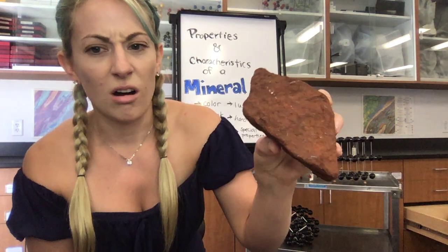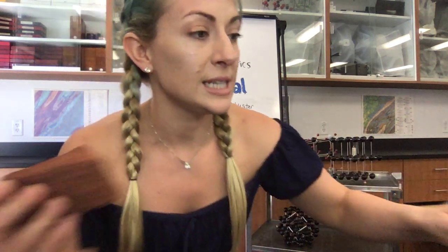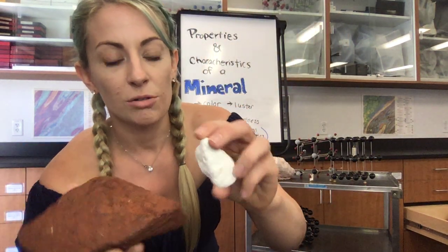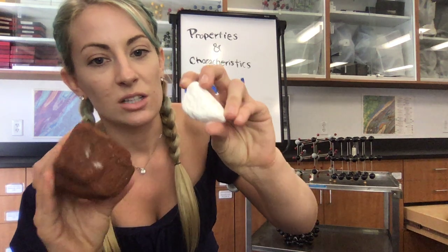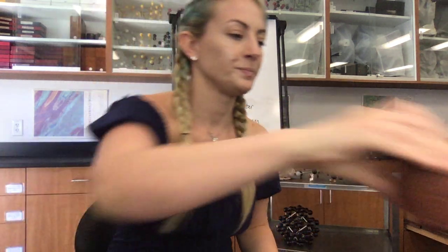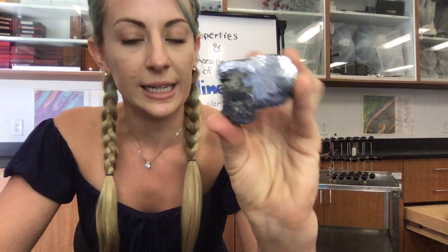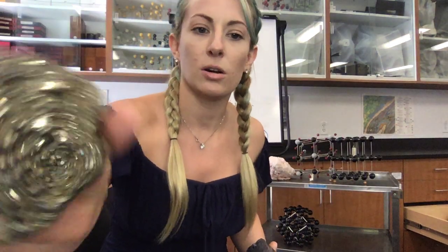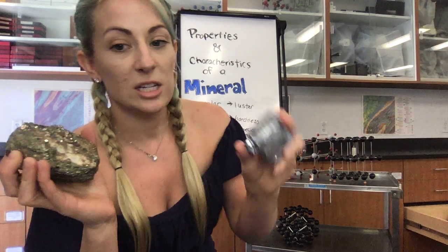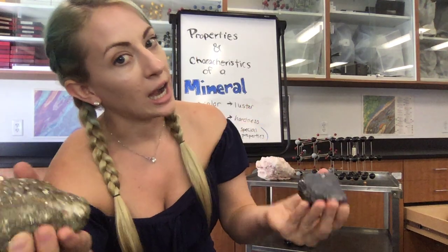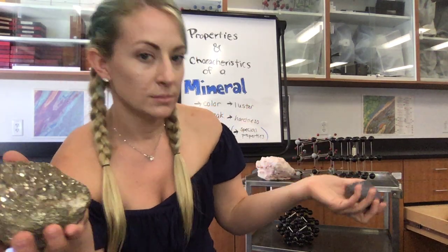Another easy-to-identify luster is called earthy. When something is dull or dirty looking, you don't see any light bouncing back into your eyes — instead it's scattered, creating a non-shiny, dull or earthy appearance. We have the metallic luster, as seen in this lead-based mineral called galena — shiny, just like you would see on a cookie sheet or a coin. It's not necessarily pretty, just shiny as you would expect a metal to be. That is why it's called metallic.